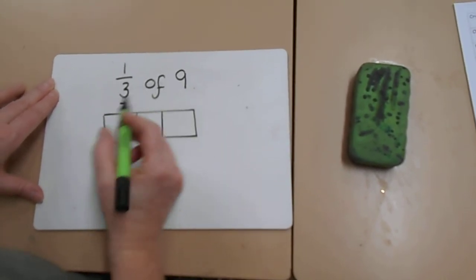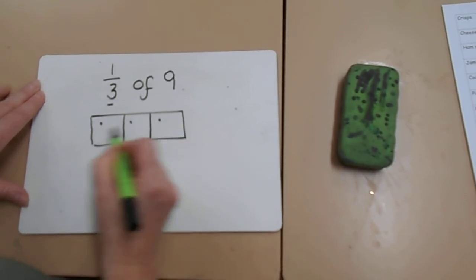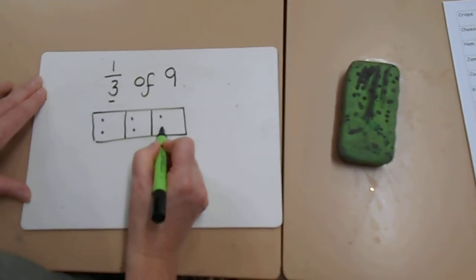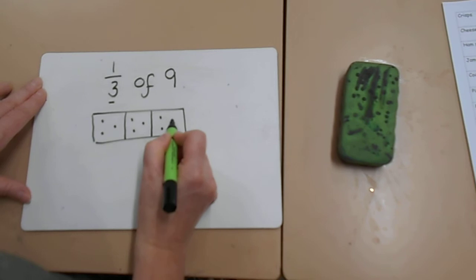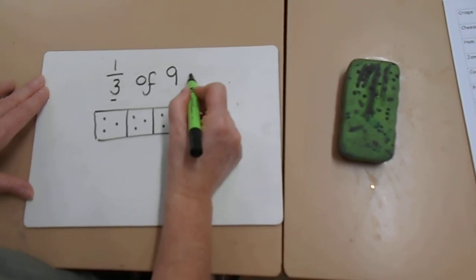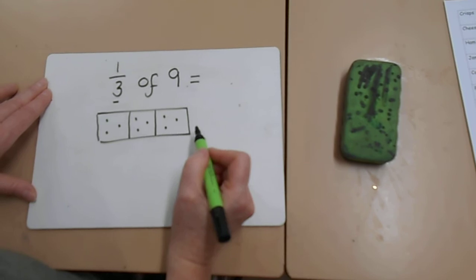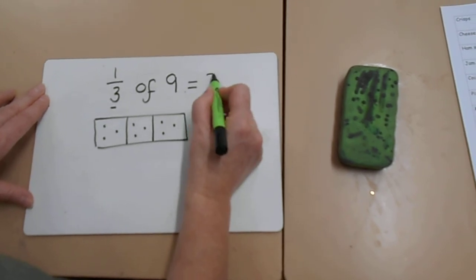So then we share out the 9 using the dots. 1, 2, 3, 4, 5, 6, 7, 8, 9. So a third of 9 is, how many dots in each part? It's 3.